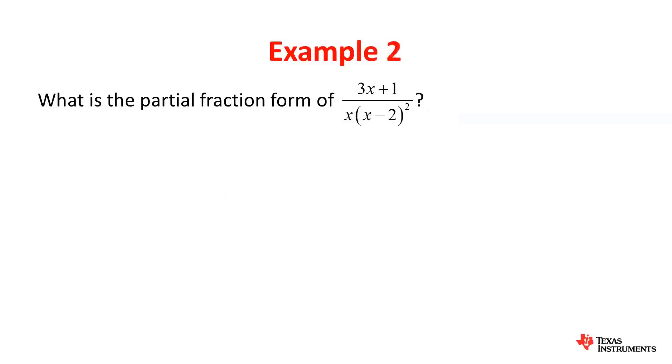Moving on to the next example, we want the partial fraction form of 3x plus 1 over x times x minus 2 squared. We can't really factorize the numerator or the denominator, however it's a good idea to check with the CAS using the expand command.